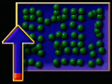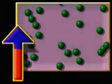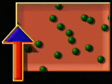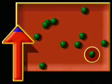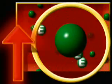In solids, molecules are tightly packed and maintain their shape. Add energy, like heat, and the molecules begin to separate and melt into a shapeless liquid. More energy, and matter turns into gas. Superheated gas becomes plasma, the fourth state of matter, where electrons tear away from their atomic nucleus and float freely around it.